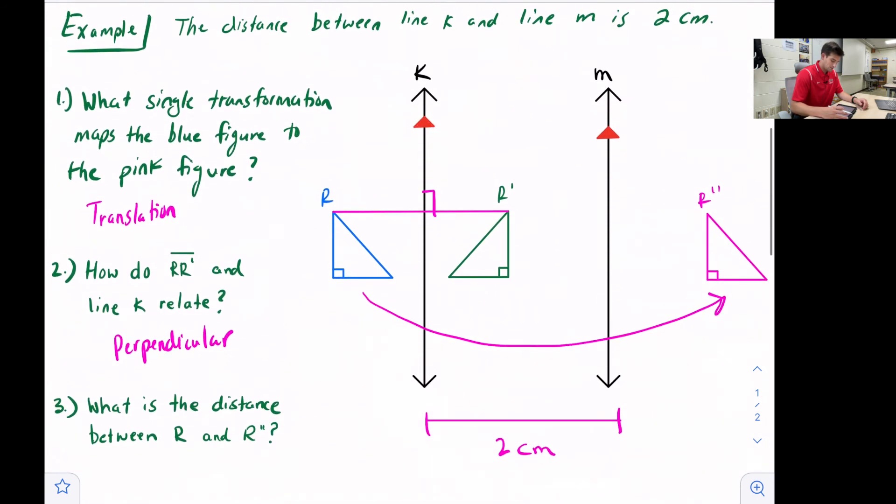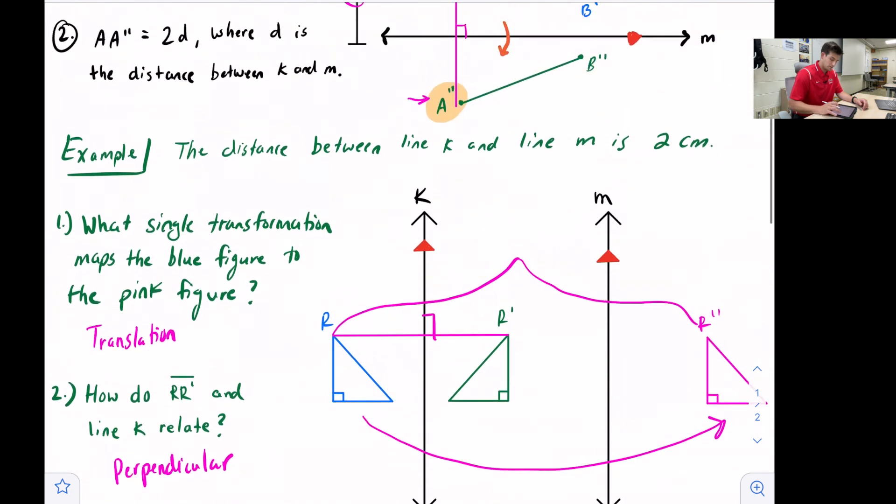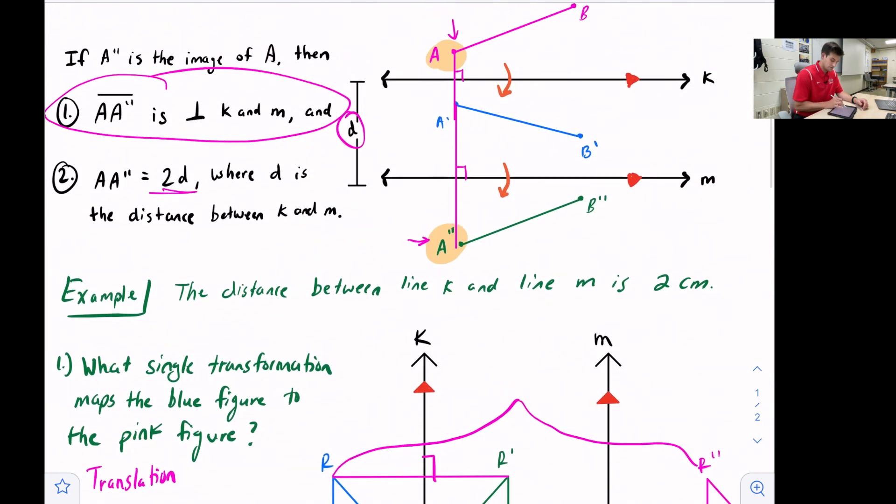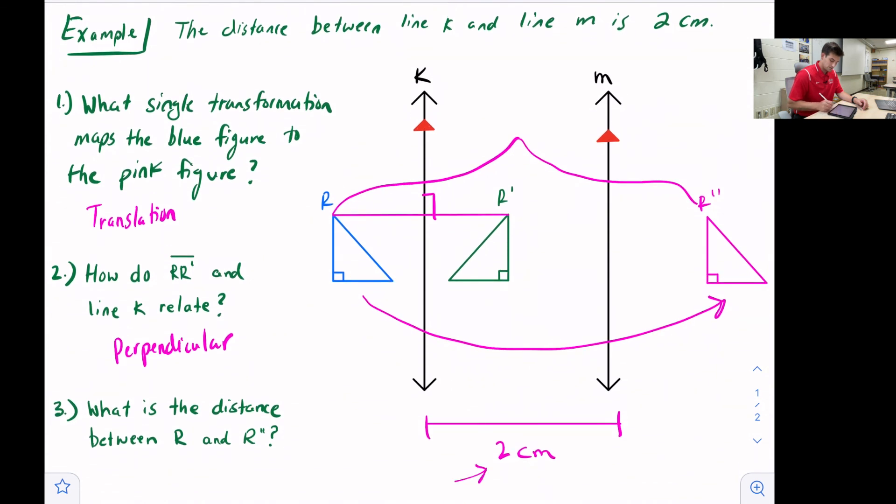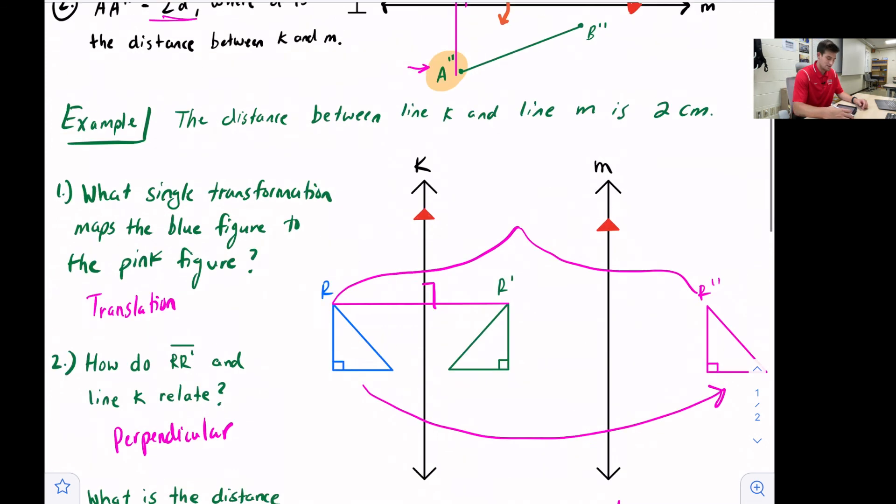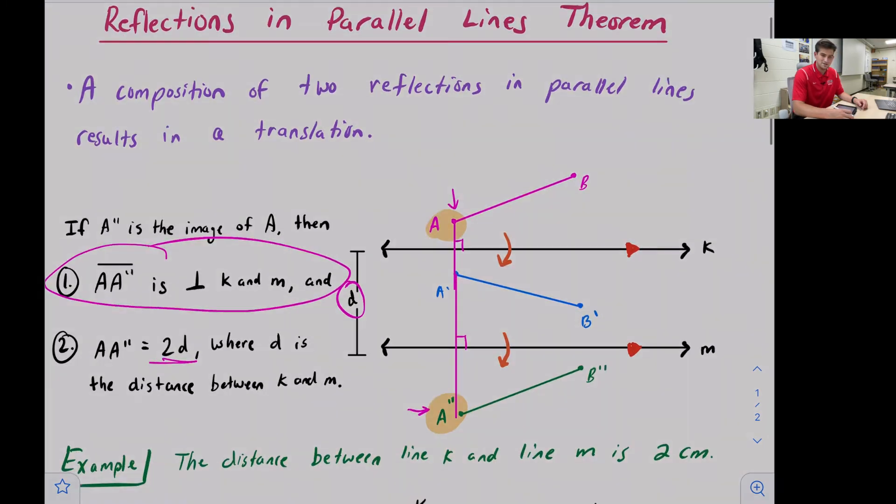And the last question, what is the distance between R and R double prime? So this distance right here. Well, we saw up in our diagram that that distance is two times the distance between the lines. The distance between our lines is two centimeters, so we would say this is four centimeters. And that is the reflections in parallel lines theorem.